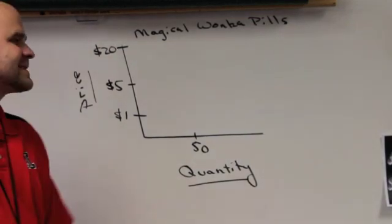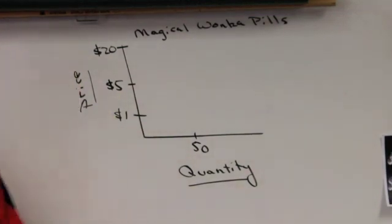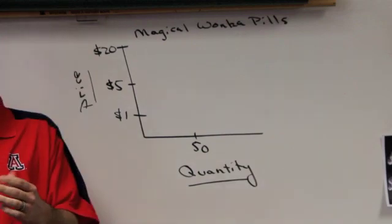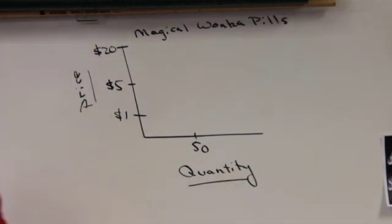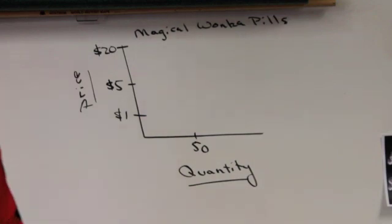Now let's look at a second product. This is called Magical Wonka Pills. This is a product that some people need if they have this disease called Leoninitis. See Leoninitis is this disease that causes people to turn into a commie and then die.